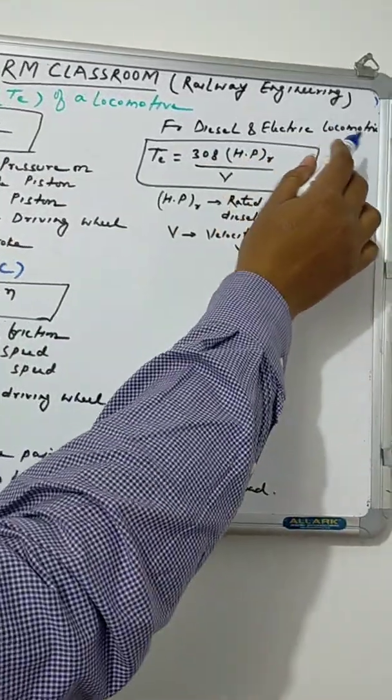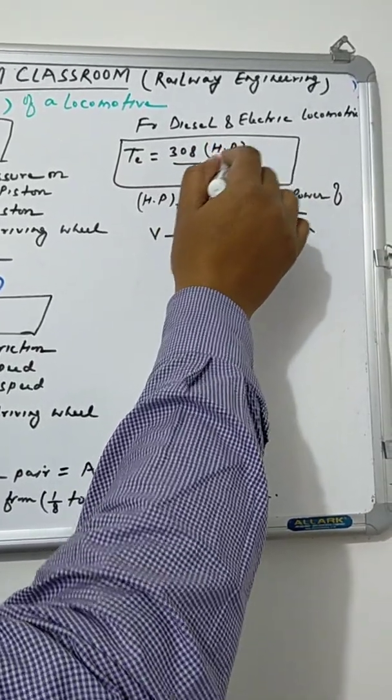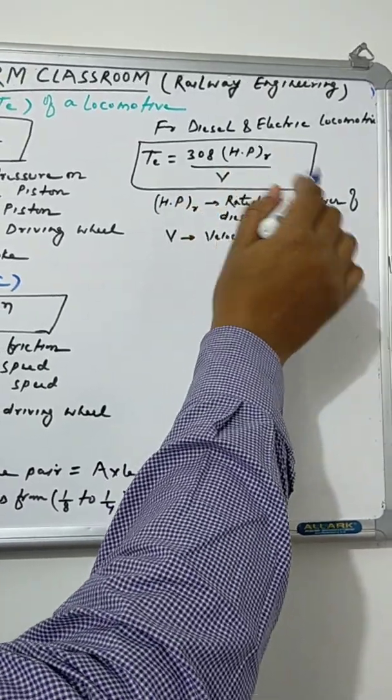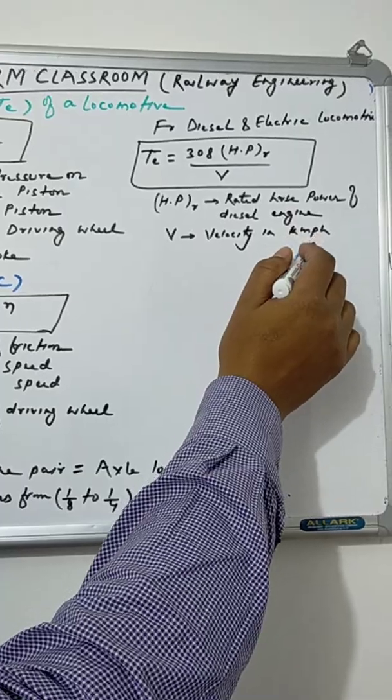For diesel and electric locomotives, the tractive effort can be computed by this expression: 308 × HP / V, where HP is the rated horsepower of the diesel engine and V is the velocity in kilometers per hour.